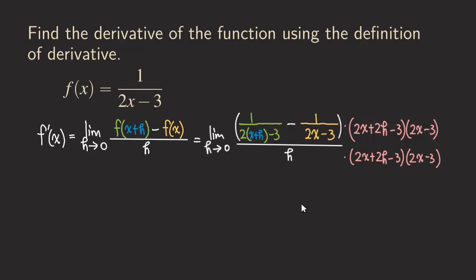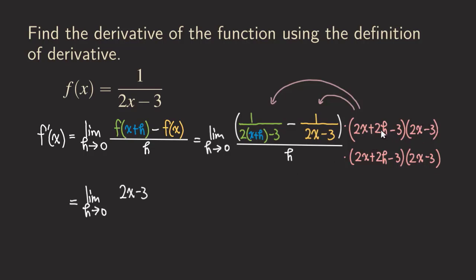The next step is to distribute this to both fractions inside the parentheses. When you put (2x + 2h − 3) at the top of the first fraction, it cancels with the denominator, and we are left with just (2x − 3) for the first fraction. Then for the second fraction, (2x − 3) cancels with its denominator, so we're left with (2x + 2h − 3). Make sure to write down the parentheses because there is a minus sign in front.